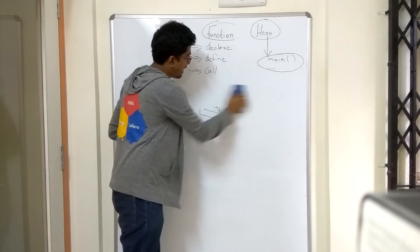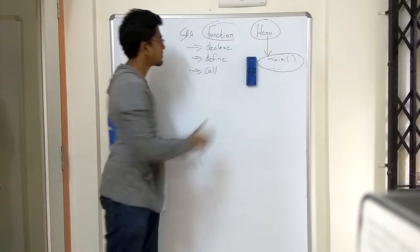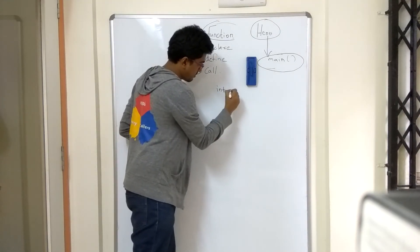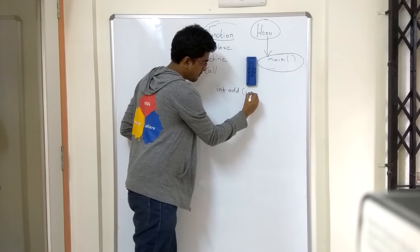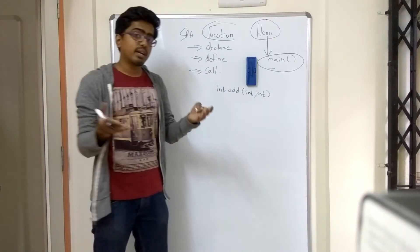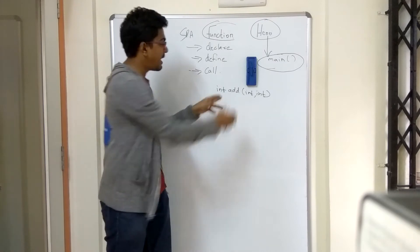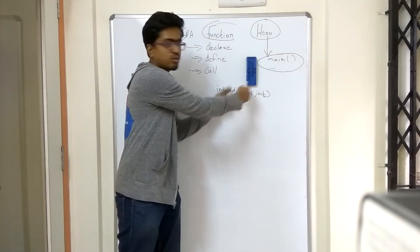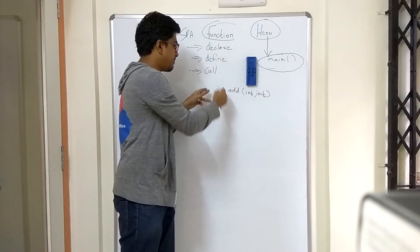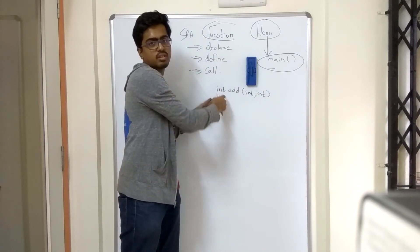Now for our addition example, a declaration would be: int add(int, int). Ye executor ko kya bolta hai? Ye bas kya bolta hai, ki add naam ka ek function hai jo do inputs leta hai jo integers hai aur ek return karta hai jiska type integer. This is the declaration.